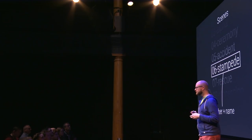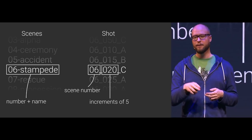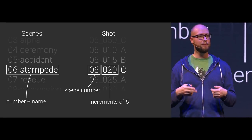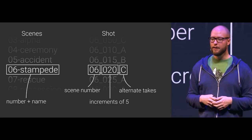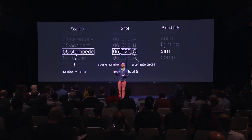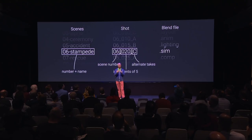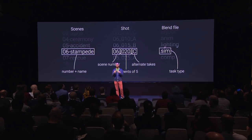How are scenes and shots named? We had 11 scenes — 10 plus credits. Scenes were given individual names since it's a short film, usually prefixed by a number. On the shot level it's a bit more complicated: we have the scene number, then the shot number incremented by five — it's sometimes easier to add a shot in between if you have some space. For a bigger production you might increment by 10 or 100. We give it a letter at the end for takes. In the blend file level, we give blend files a little dot notation to signal what task that blend file is associated with.